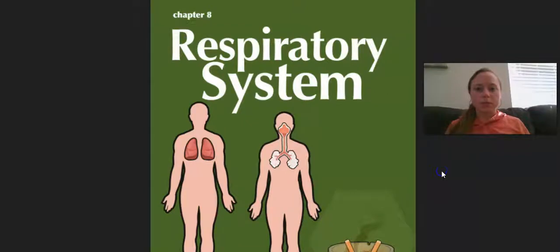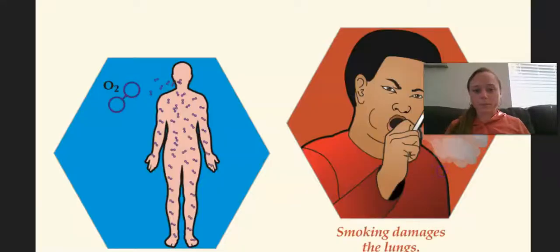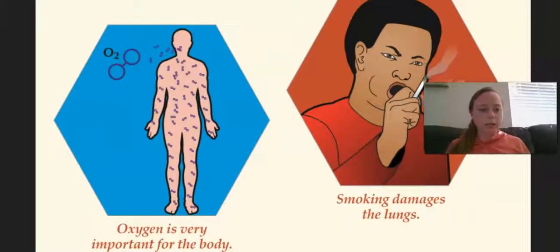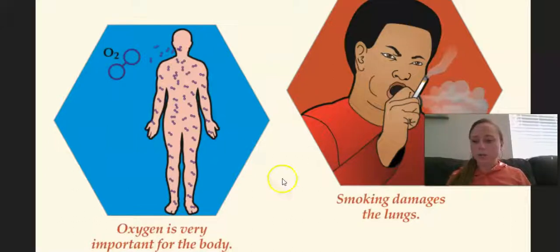We're going to be continuing our chapter on the respiratory system. Here are some more of the main ideas from this chapter. First up is that oxygen is very important for the body. Remember, we breathe in oxygen. Next up is smoking damages the lungs. Damages means it's bad for the lungs.